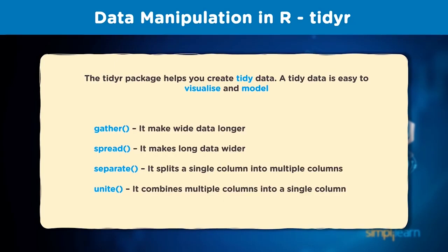gather() makes wide data longer — it stacks up multiple columns. spread() makes long data wider — it unstacks data that has the same attributes and spreads it across multiple columns. separate() splits a single column into multiple columns. And to complement that, unite() combines multiple columns into a single column. These are the four main functions used in the tidyr package.